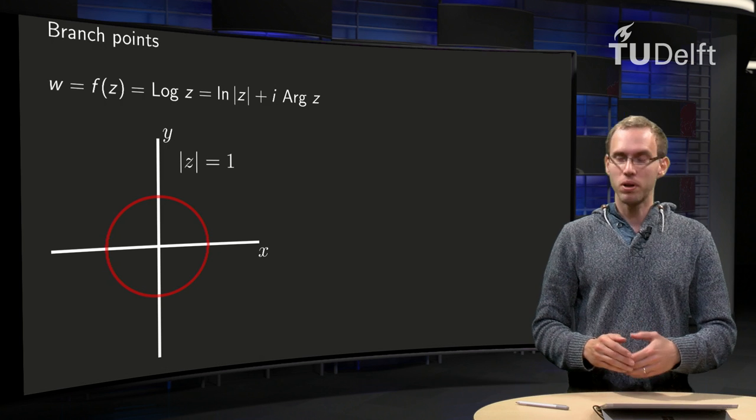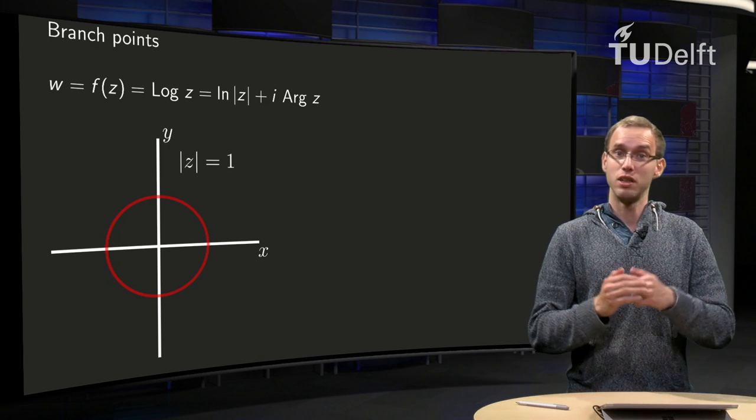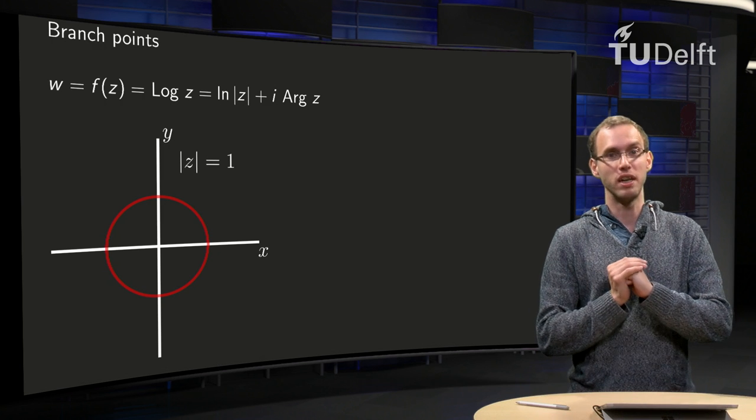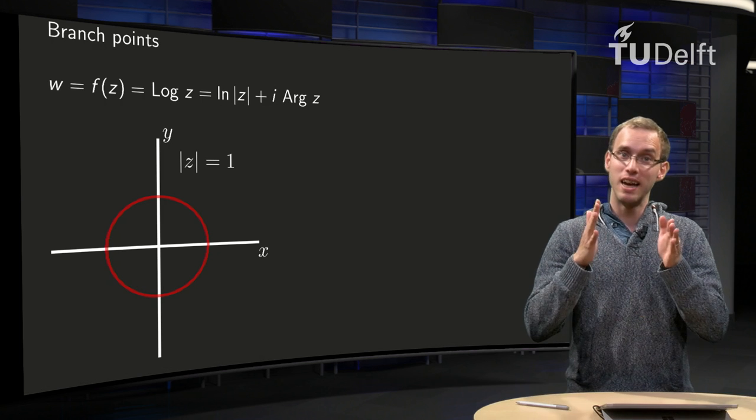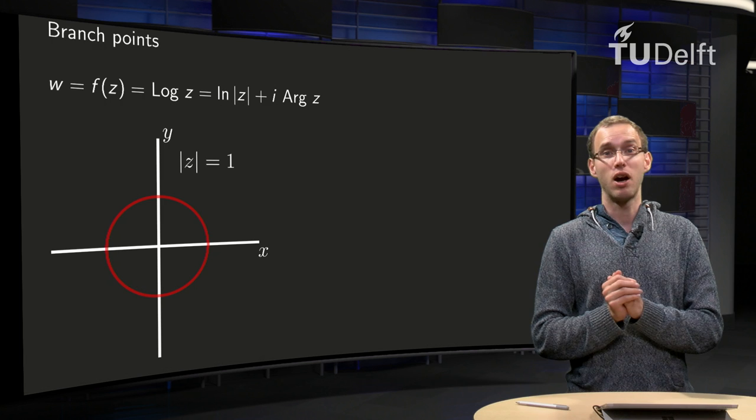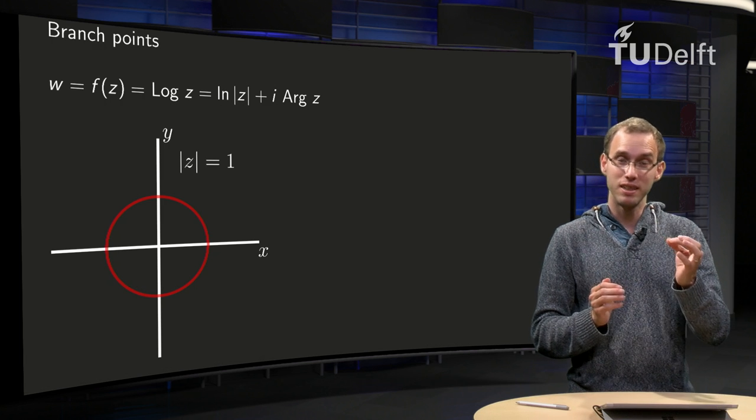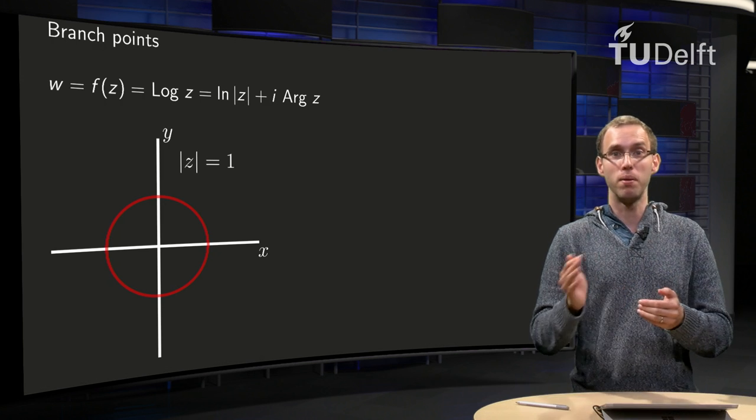Let us take a look at the function w equals f of z, the log of z. We take the capital Log of z, so we know how this one is defined: it is the ln of the norm of z plus i times the Arg of z, where we take the capital A, so the principal value of the argument, between minus pi and pi.